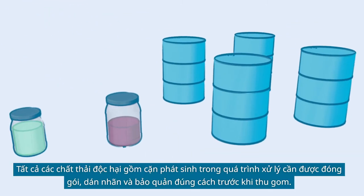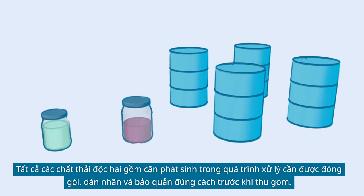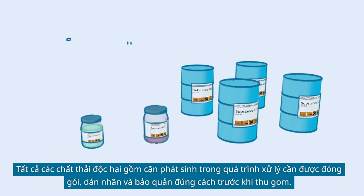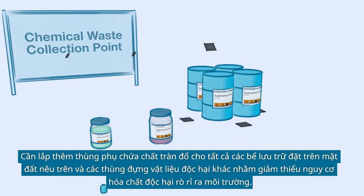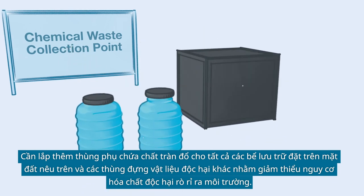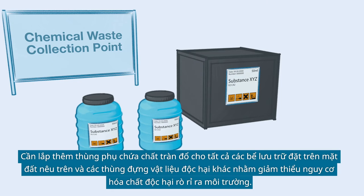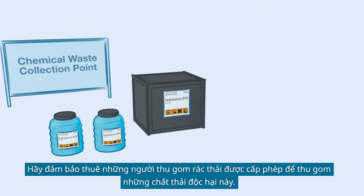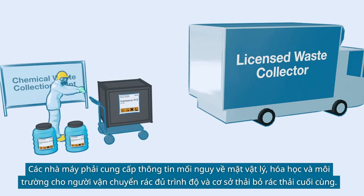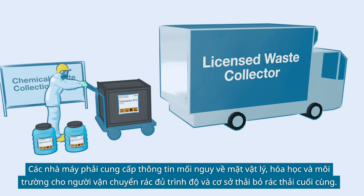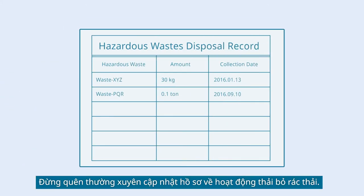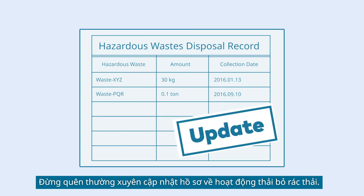All hazardous waste, including the treatment sludge, should be packed, labeled, and stored properly before collection. Secondary containment should be provided for all above-ground storage tanks and other hazardous material containers, in order to minimize the chance of hazardous chemicals leaching into the environment. Be sure to use licensed waste collectors for these hazardous wastes. Factories must provide physical, chemical, and environmental hazard information to their qualified waste transporters and the final waste disposal facility. Do not forget to regularly update your waste disposal records.